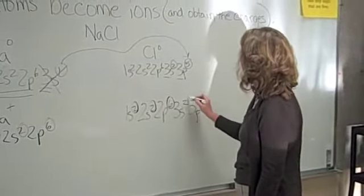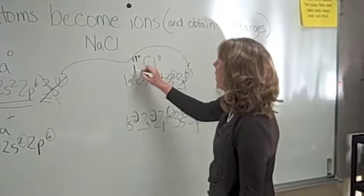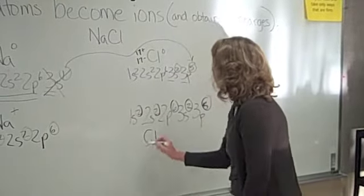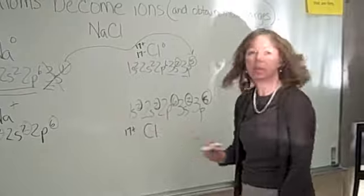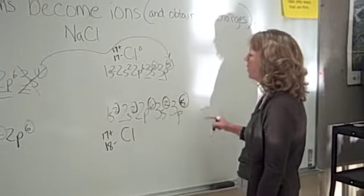instead of having 17 protons that we had up here and 17 electrons, chlorine will now have 17 protons still and 18 electrons if you count these across.